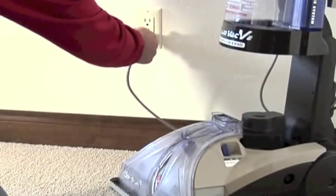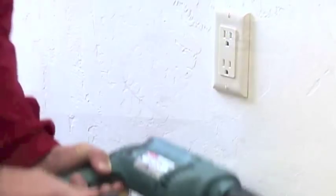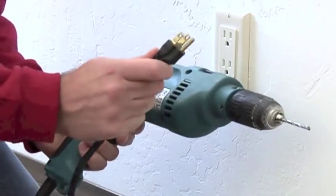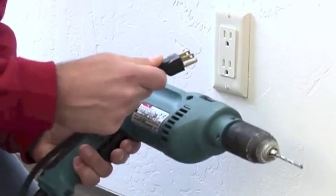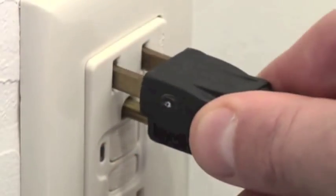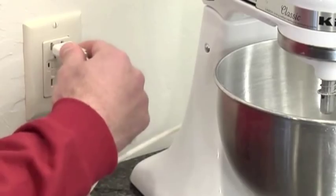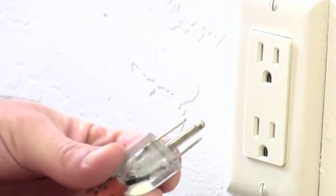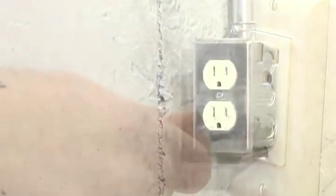In the days before outlets had a ground prong, the homeowners stood a good chance of becoming the path to ground. A loose wire could charge stoves, refrigerators, dryers, portable tools, radios, almost anything, with electrons looking for a place to go.